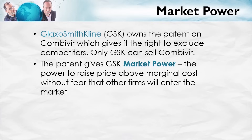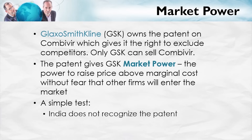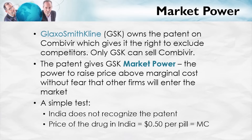Market power is the power to raise price above marginal cost without fear that other firms will enter the market. How do we know that price is above marginal cost? Here's a simple test. In the United States, Combivir costs around $12 to $13 per pill. India, however, does not recognize the patent on Combivir, so there are many producers selling in a competitive market. In a competitive market, price falls to marginal cost — and in India, the price of Combivir is about $0.50 per pill. Thus, in the United States, the price is about 25 times higher than the marginal cost.